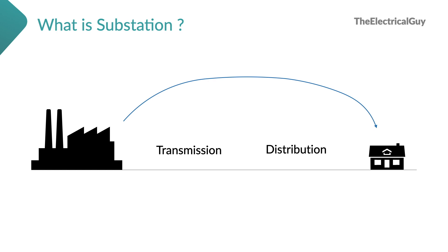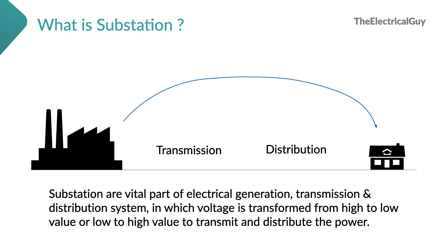In the distribution phase, we lower the kV level of the power coming from the transmission phase — down to let's say 11 kV, or even 400 V, 230 V — and then give it to the end customer. During this phase we have to step voltage up and step it down, and to do that we need substations. So we can define substation as a vital part of the electrical generation, transmission and distribution system in which voltage is transformed from high to low value or low to high value to transmit and distribute the power.